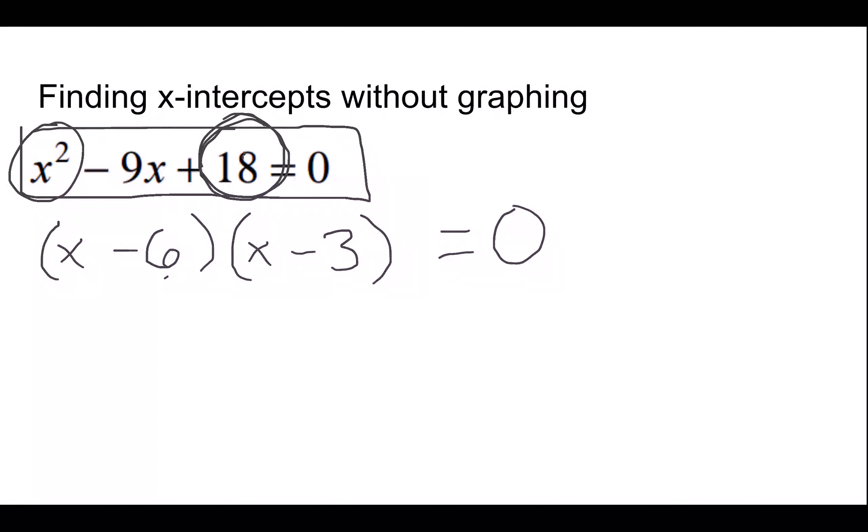So it factors into this thing. And this is extremely helpful to me because now we have something times something equals 0. So when you think about it, what are the only things that multiply together to give you 0?